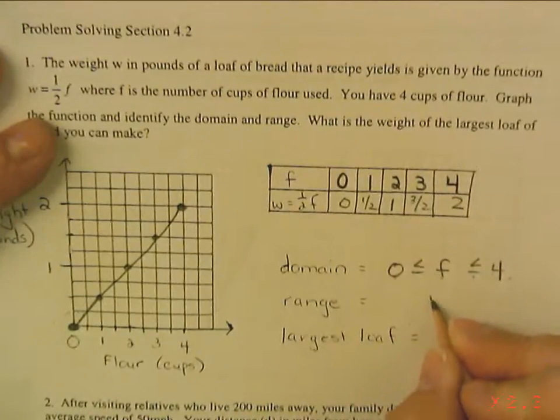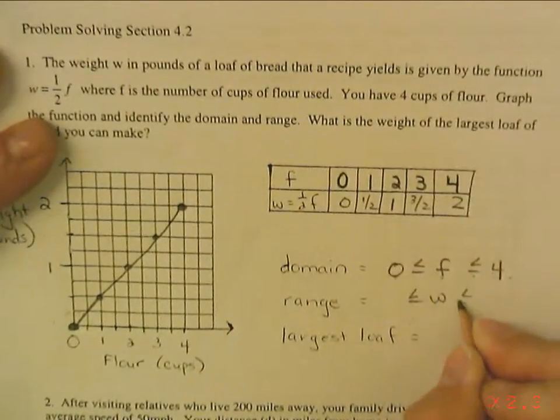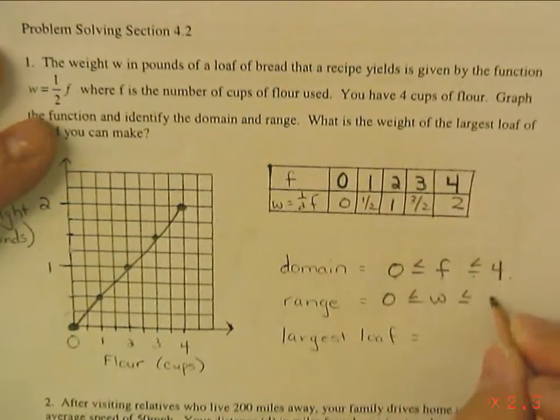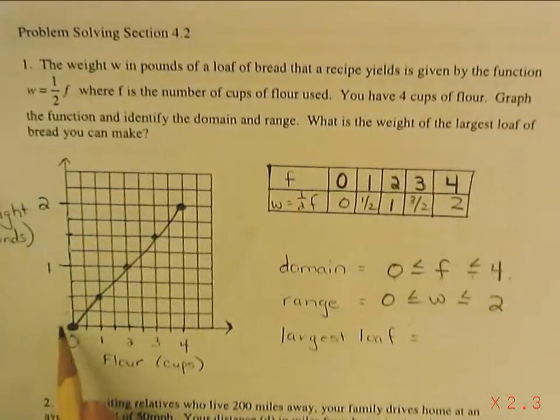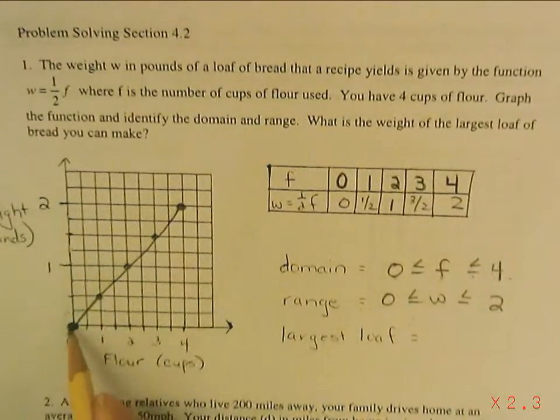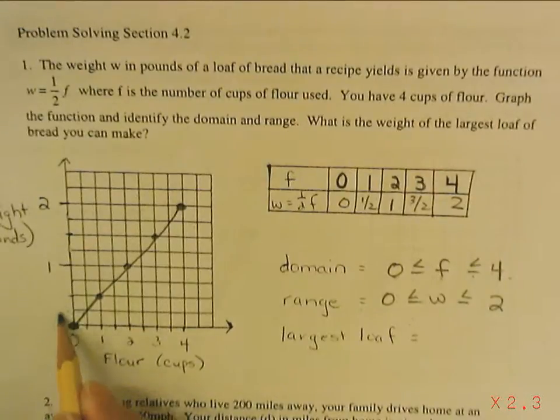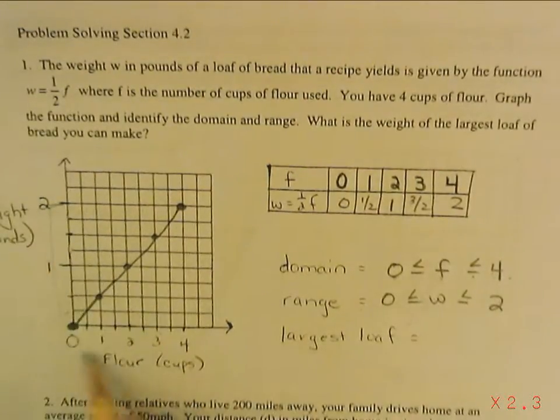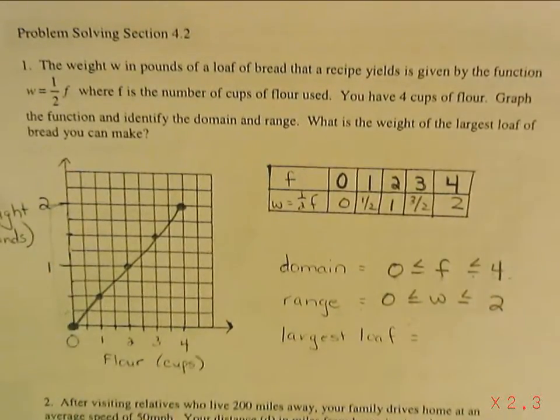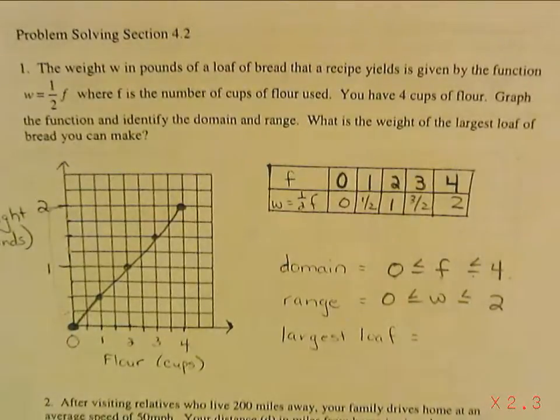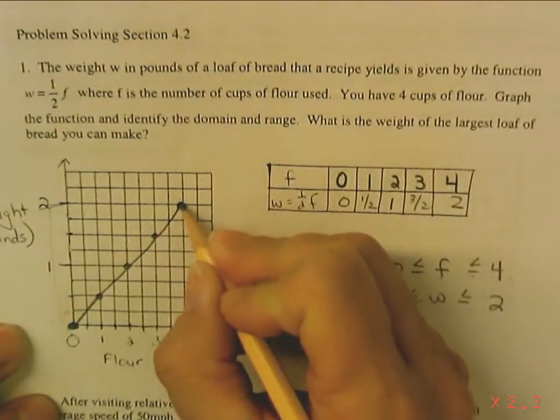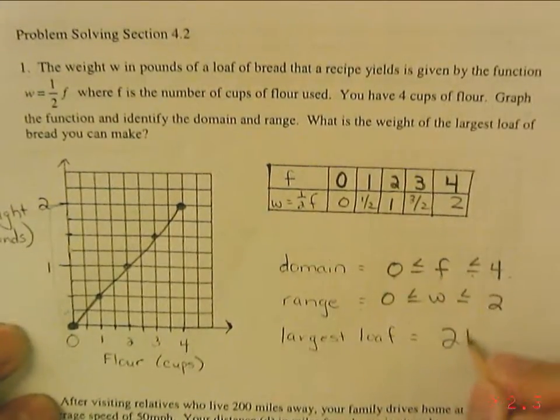Which means my range is going to be a compound inequality between zero and two. So if you look here, weight can be anywhere from zero all the way up to two. Flour can be anywhere from zero all the way up to four. And the largest loaf would be right up here. It would weigh two pounds.